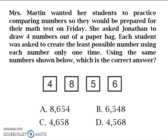The four numbers are 4, 8, 5, and 6. Answer choice A is 8,654. Answer choice B is 6,548. Answer choice C is 4,658. Answer choice D is 4,568.